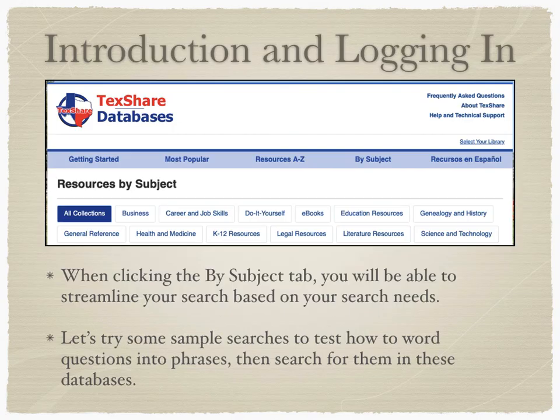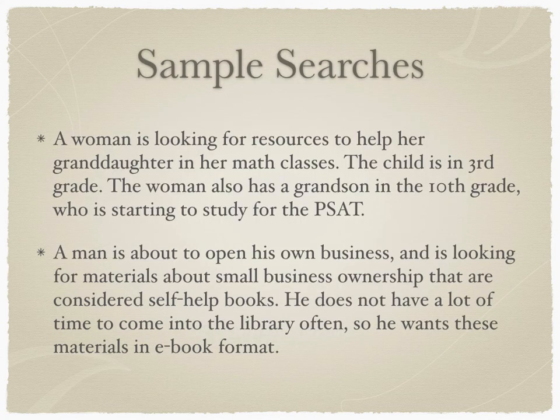Clicking By Subject takes you to a page where databases are organized into 13 different categories. This will help streamline your searches and help you become familiar with certain journals and databases as you continue to use them. Now we are going to walk through two sample searches to get a feel for what these databases look like and how we can turn our search questions into searchable phrases that produce results.